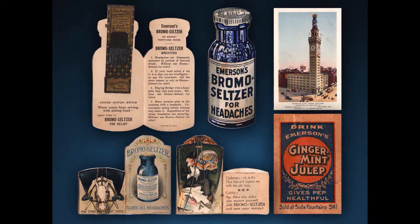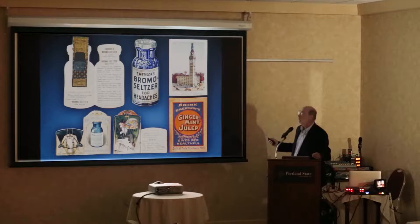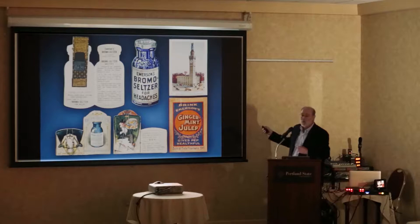Baltimore was a real hub of patent medicine and printing. This is the Bromo Seltzer Tower — Emerson Bromo was manufactured right in Baltimore. If you go to Oriole Park at Camden Yards, this building is right over the foul pole, now called the Emerson Building, converted to artist lofts. They used to have a 22-ton bottle that would rotate on top of the building, lit by 1,000 lights, visible from Maryland's eastern shore. It was taken down in 1930 due to cracks in the tower.